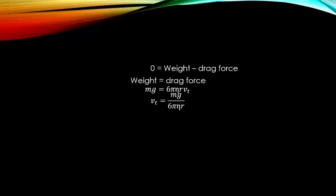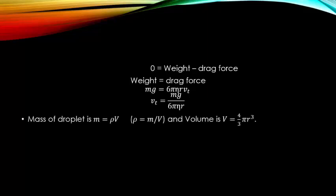Now we find the value of mass and volume to insert into this equation. The mass of the droplet is m = ρV, where ρ is the mass density and V is the volume. Since water droplets are spherical, the volume is that of a sphere: V = (4/3)πr³. Substituting this into the mass formula gives m = ρ × (4/3)πr³.